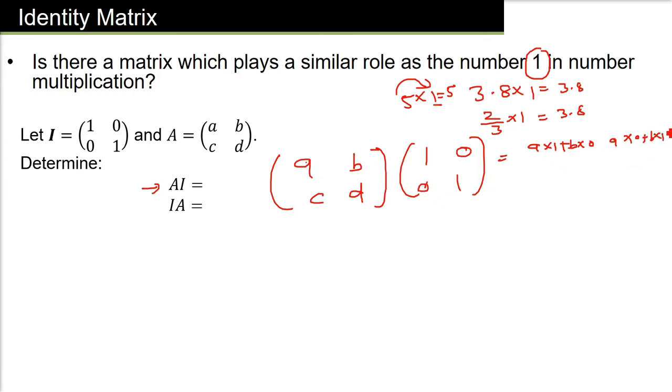Okay. Now again, the second row with the first column, C into 1 plus D into 0. Then the second row with the second column, C into 0 plus D into 1.